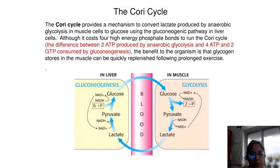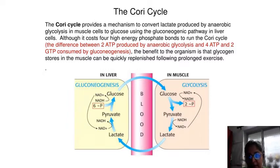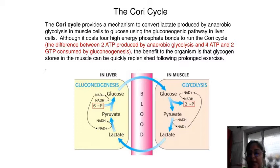So basically, what is the process of the Cori Cycle? Muscular activity requires ATP, which is provided by breakdown of glycogen in the skeletal muscle.